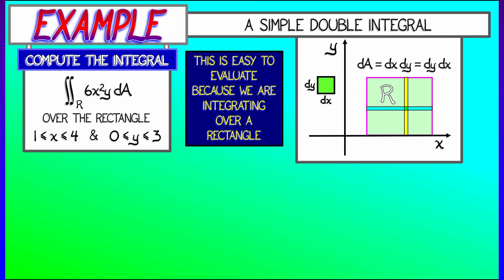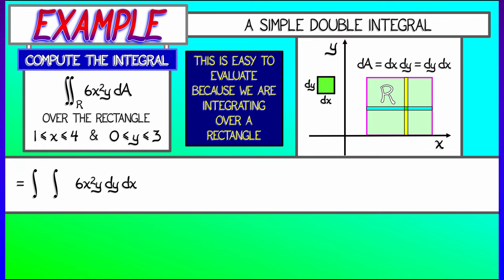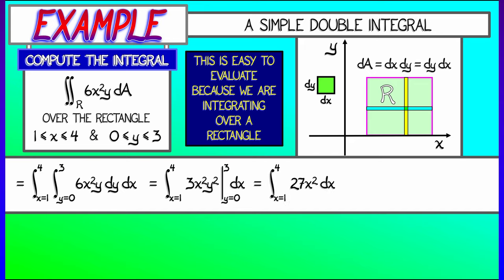Since this is a rectangle, it will have nice numerical limits of integration. Let's integrate 6x²y dy dx — that is, integrate y first. The inner integral has limits y from 0 to 3, and the outer integral has limits x from 1 to 4. Anti-differentiating with respect to y gives 3x²y². Evaluating that as y goes from 0 to 3 gives us 27x².